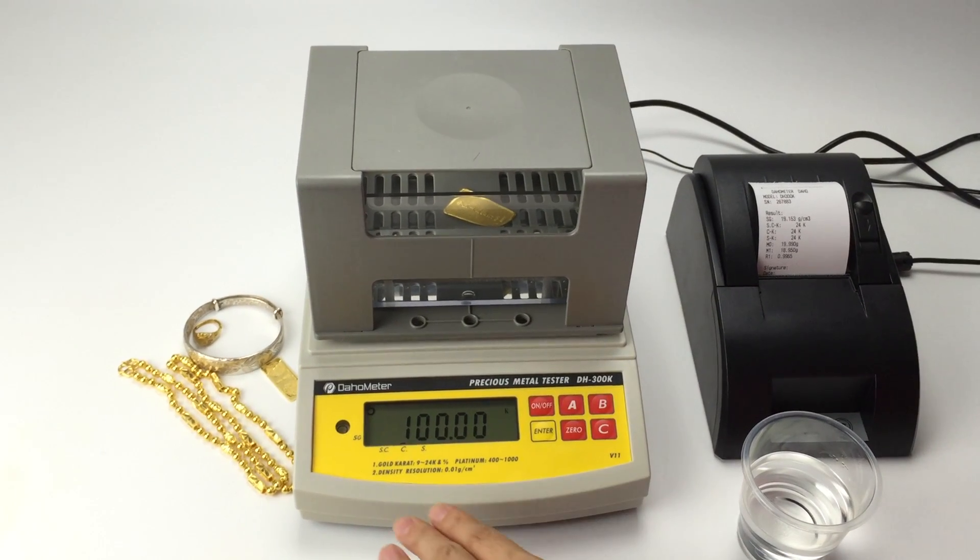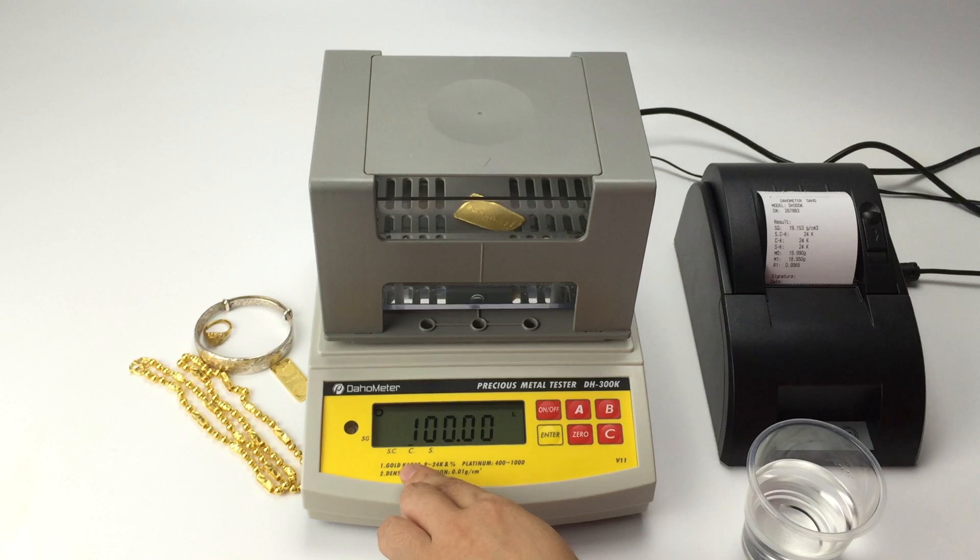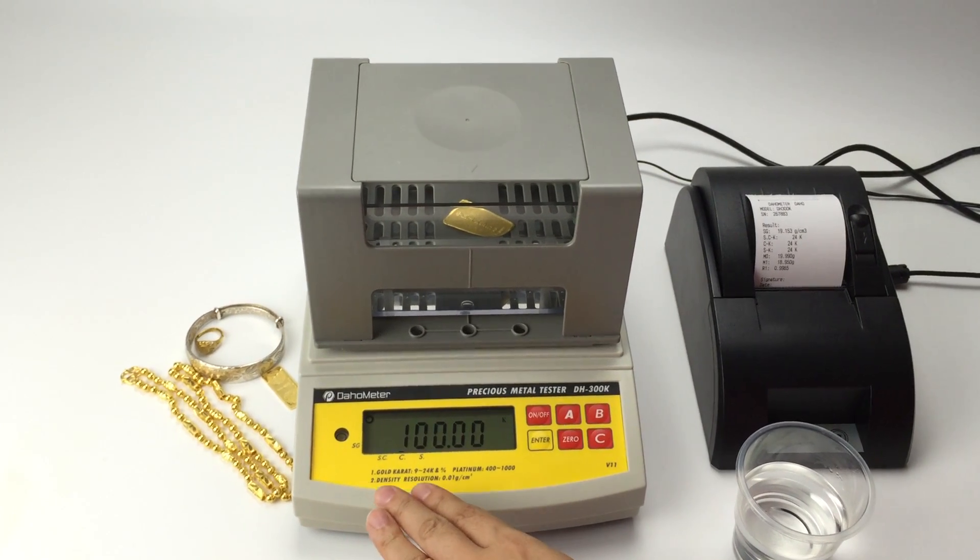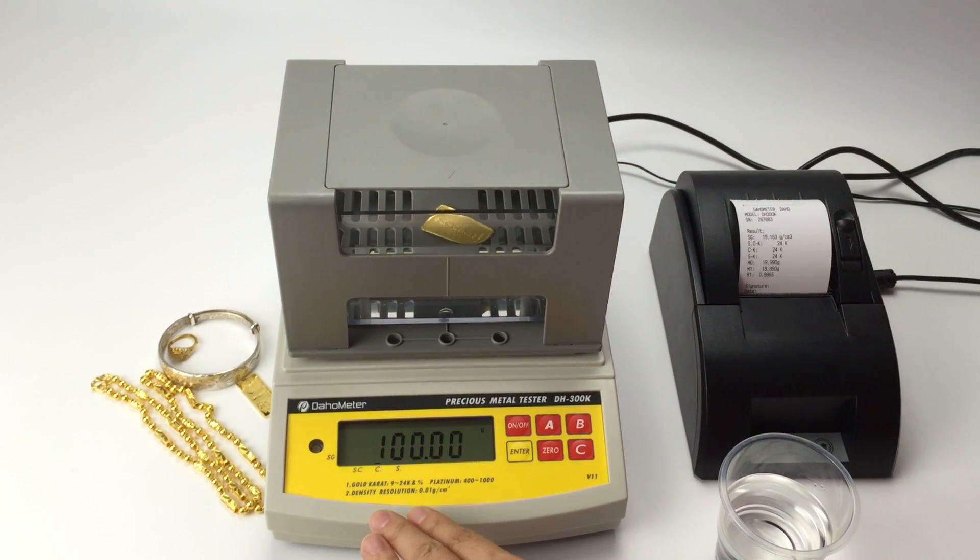Press A. The arrow is directed to C, which means this is the purity percentage for gold, copper.